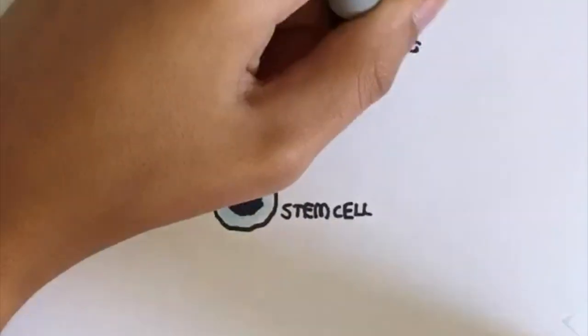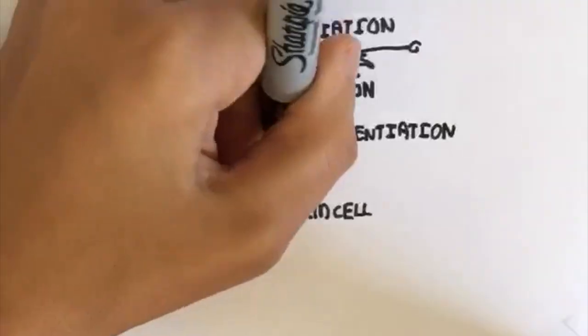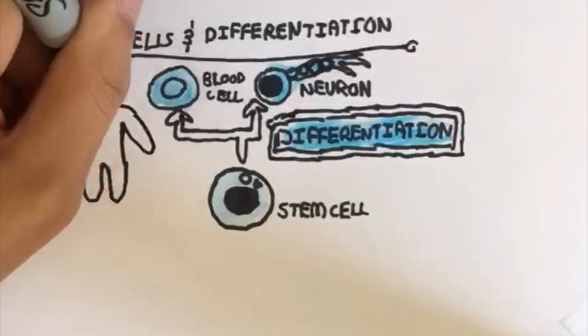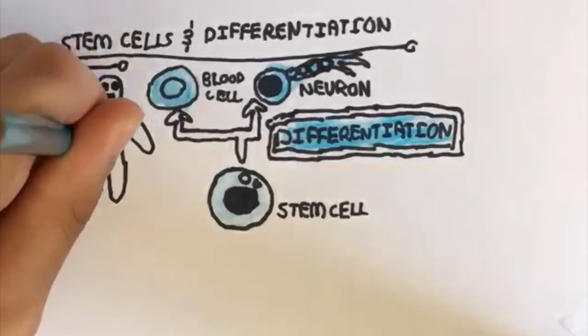This is where stem cells come into play. In a process called differentiation, stem cells can become specialized, turning into your neurons, blood cells, skin cells, etc.